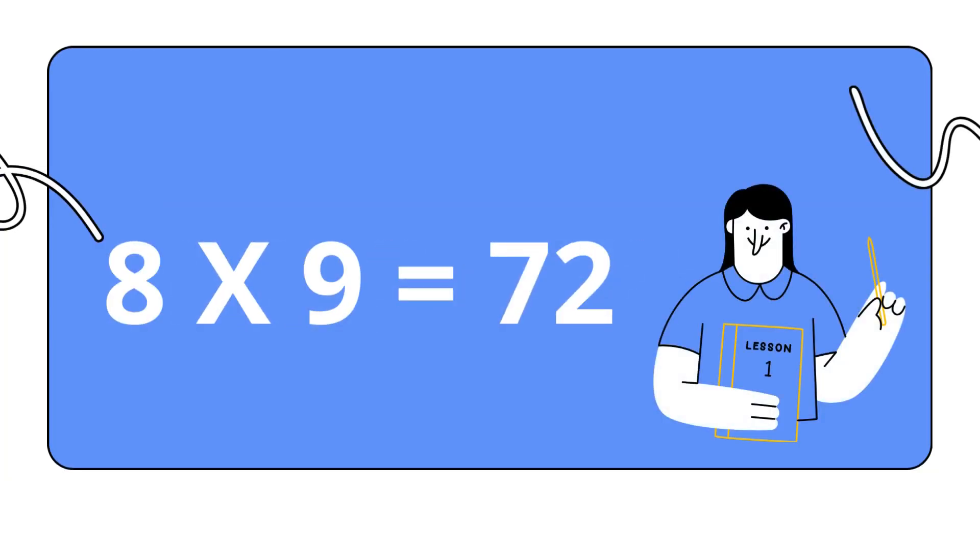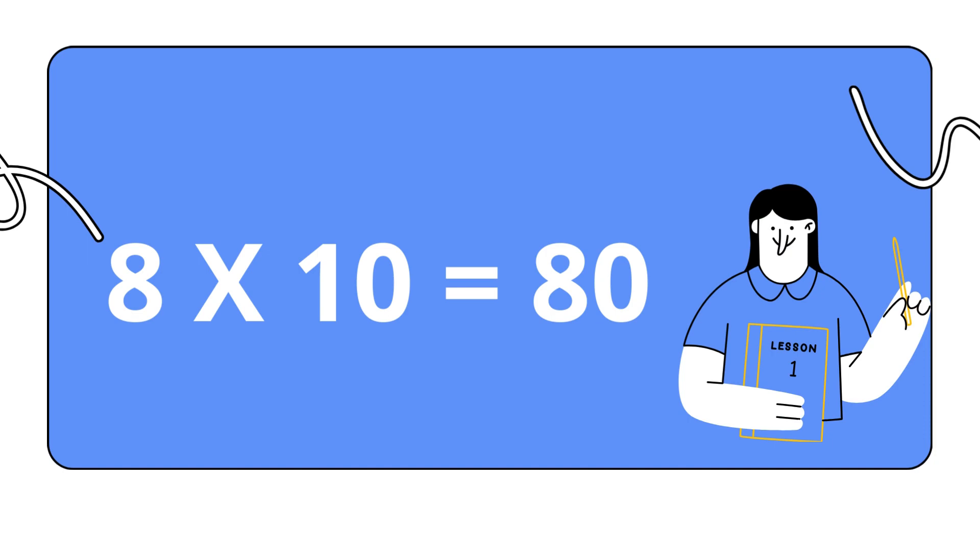Eight nines are seventy-two. Eight nines are seventy-two. Eight tens are eighty. Eight tens are eighty.